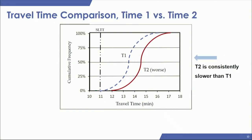For congestion severity, you take time one and time two and look at the relative positions of the curves for the same corridor across two time periods. In this example, T1 is always shifted to the left, meaning a lower travel time, while T2 to the right means worse travel time. It's a straightforward example to illustrate the concept.